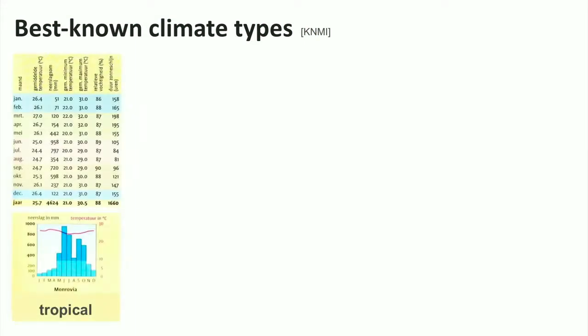These are the data of a tropical climate, such as middle Africa. If you look at the graph well, you will see that the temperature is always high, and that there is a wet and relatively dry season.